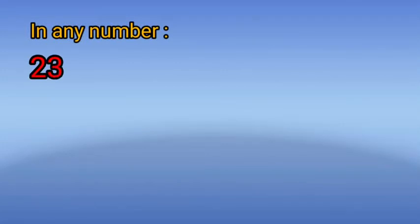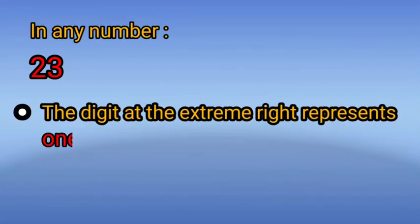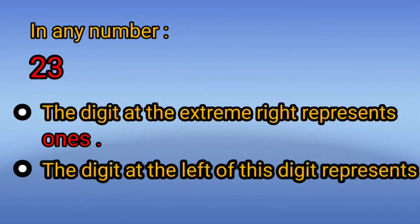In any number, like 23, the digit at the extreme right represents ones, and the digit to the left represents tens.